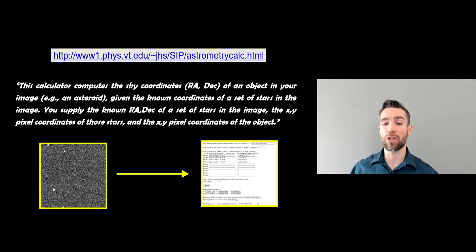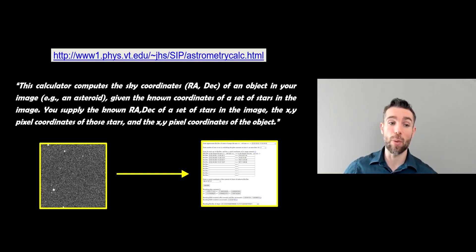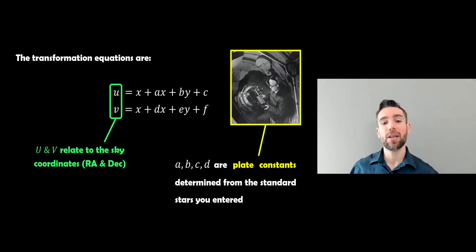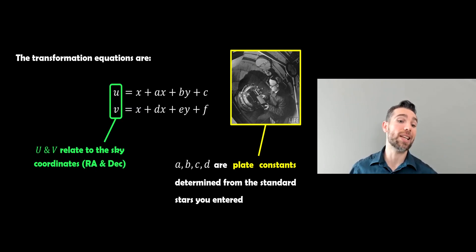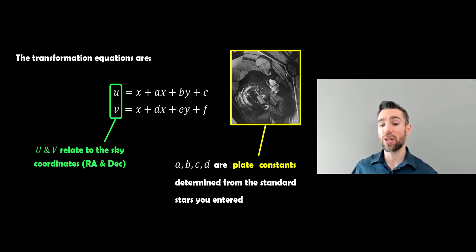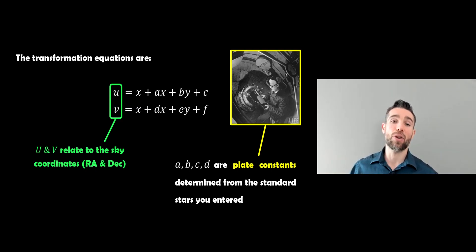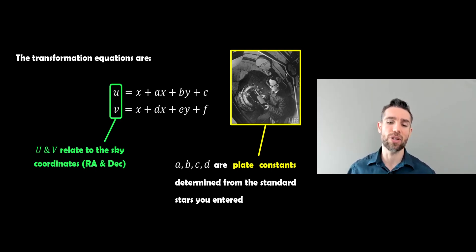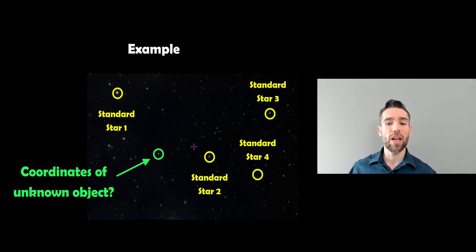It will then calculate the RA/Dec of your unknown object. On the right-hand side at the bottom is a screenshot of what that calculator looks like — we'll look at that in more detail when we put the example in. The transformation equations are given here: u and v relate to your sky coordinates (RA/Dec), x and y are your pixel coordinates in the image, and a, b, c, d are your plate constants, which are determined from the standard stars. They're called plate constants because historically astronomical images were taken on plates.